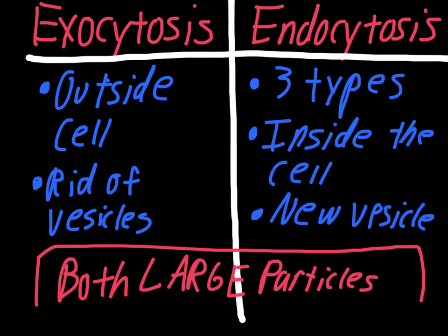The key to this really is the prefixes. 'Endo' means bringing things in. 'Exo,' like exit, means sending things out of the cell. Thank you for watching, and I hope you learned something.